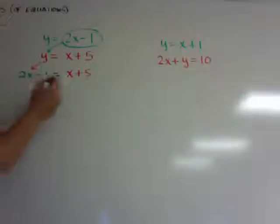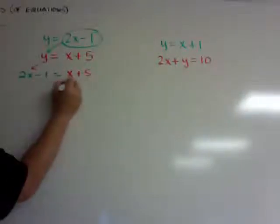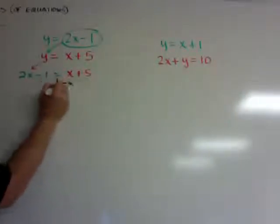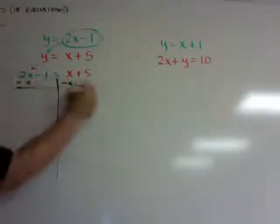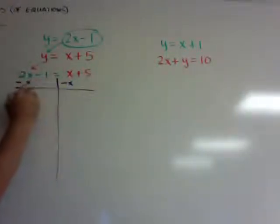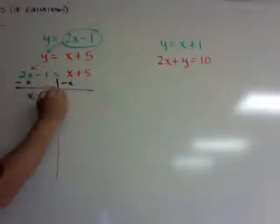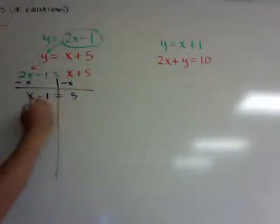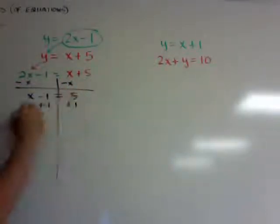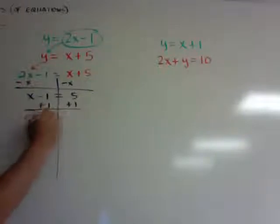So when I solve it, I can minus x from both sides — minus x — and I got x minus 1 is equal to 5. I can plus 1 to both sides and I get x equals 6.